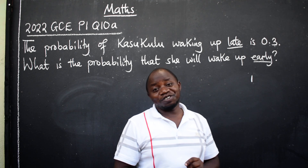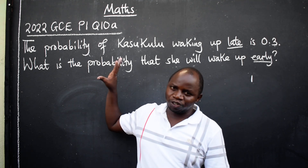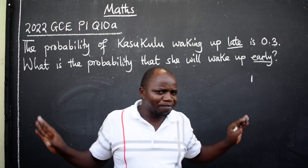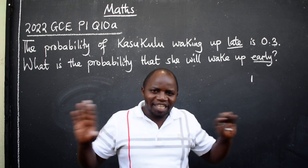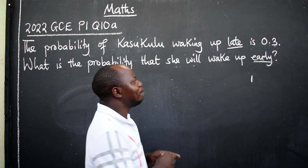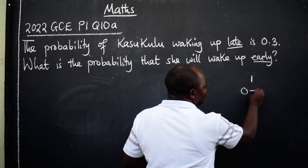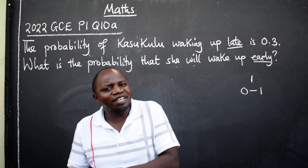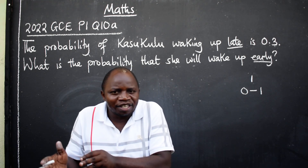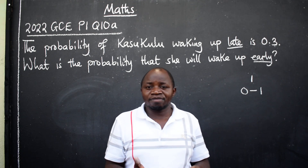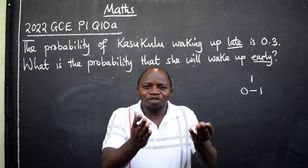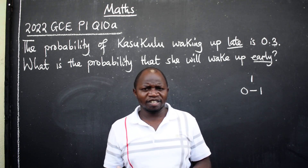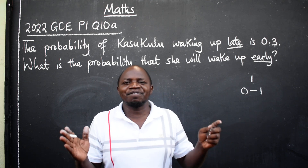The other condition you need to know under the topic probability is that all answers — whatever type of question you have been given — fall between 0 and 1. That's it. You can only have probability 0, 0-point-something, up to 1. And also fractions of course, like 1 over 2 or 3 over 5. Those are the answers we get in probability.